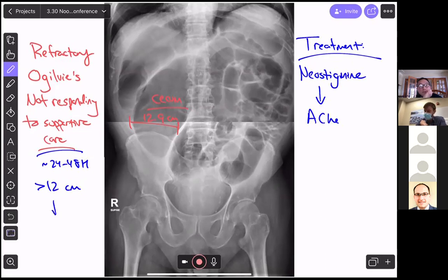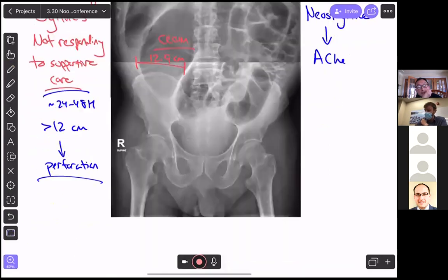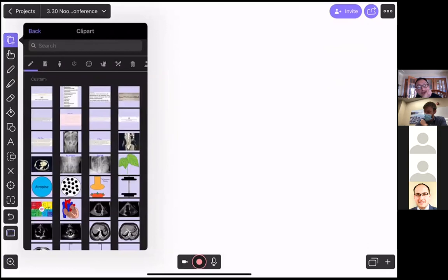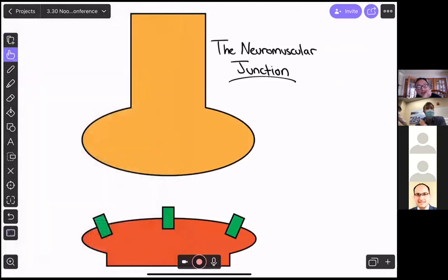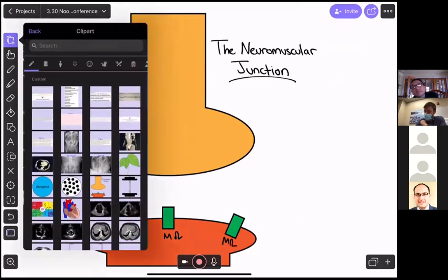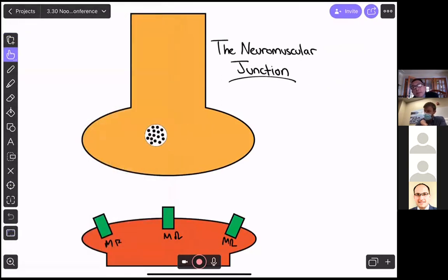And so we're going to talk more about this mechanism in just a second. And the specific indication in this case which Corey and his group are talking about is that this person has not responded to supportive care. So essentially you set this time course, approximately like 24 to 48 hours before you should respond, and their cecum is greater than 12 centimeters is typically the cutoff that most people use. And so if you meet both those criteria, consider neostigmine because the thing we're all concerned about is you risk perforating, and that's obviously a worst case scenario. Okay.